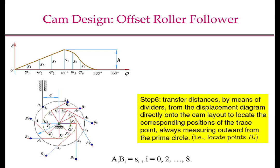Now we need to transfer distances. We take S1 at phi 1 and mark point B1 such that A1 B1 equals S1. Similarly, at A2 we take distance S2 and mark B2 such that A2 B2 equals S2, and so on to the end. At the end of this step, we have located all the points B0, B1, B2 through B8. Note that A0 and B0 are the same, because at phi equal to 0, the displacement is 0.